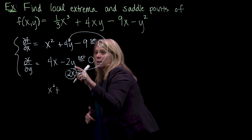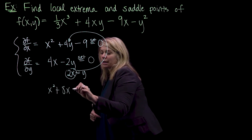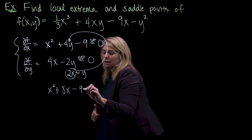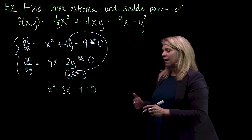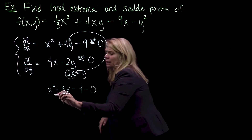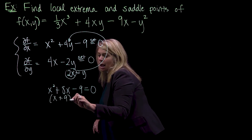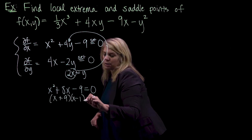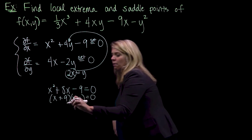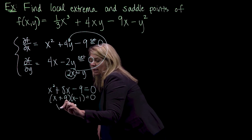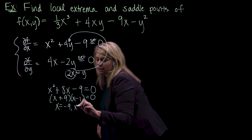Substituting y = 2x into the first equation, I have x squared plus 4 times 2x, so plus 8x minus 9 equals 0. This is quadratic and it factors pretty easily: x plus 9 times x minus 1, and setting each factor equal to zero, we get x equals negative 9 and x equals 1.